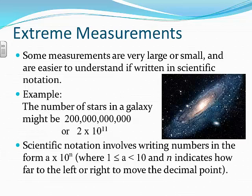The value of 'a' in this formula is somewhere between 1 and 10 — it could be 1, but it can't be 10; it's got to be something less than 10 and greater than or equal to 1. The power on 10, indicated with an 'n', indicates how far to the left or right to move the decimal point when converting back to normal notation.